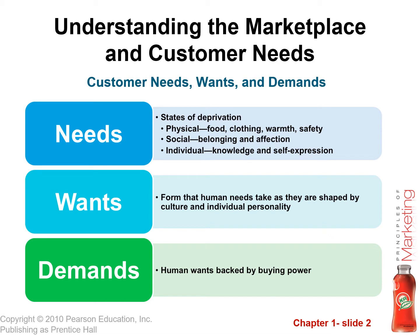The third concept is demands. We could want many things, but if we don't have money or buying power, we wouldn't expect the market to provide it. I might want a particular car or house, but if I can't afford them, my preference won't really be responded to by the market. Demands are a want combined with money or buying power behind it. Demand is only effective when people are willing to put their money where their mouth is — not just express a preference, but actually engage in buying behavior.